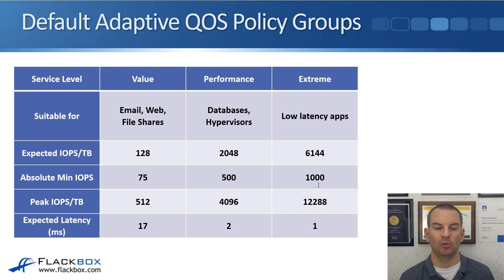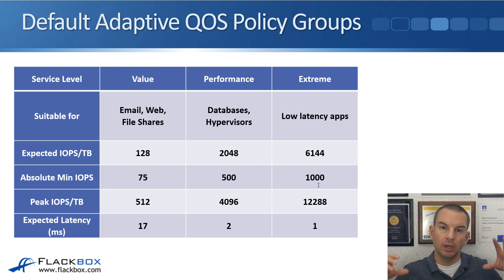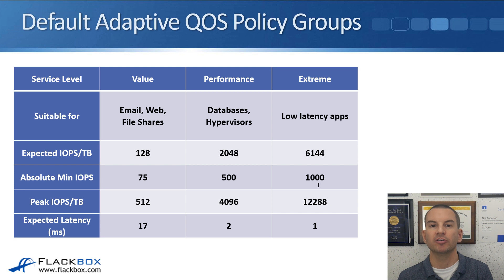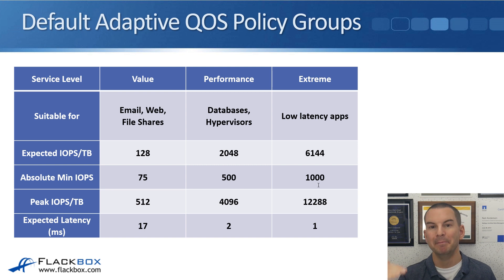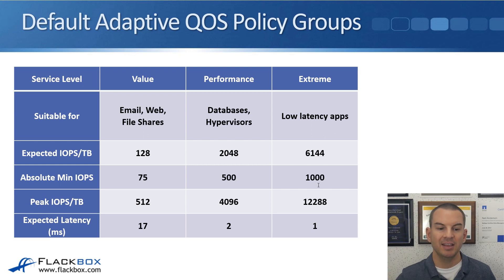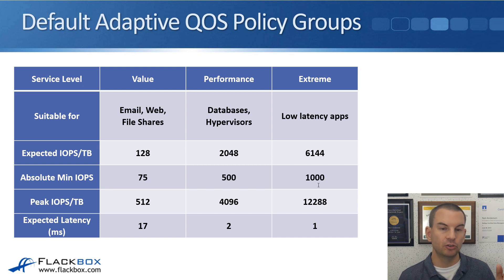The absolute minimum IOPS is for situations like a new, empty volume — because scaling is based on the amount of data, an empty volume would otherwise be given zero IOPS. The absolute minimum ensures it always has a floor. For example, with the value policy, a volume gets 128 IOPS per terabyte as its expected IOPS. When the volume has data above the absolute minimum threshold, the expected IOPS (floor) and peak IOPS (ceiling) scale accordingly with the data size.